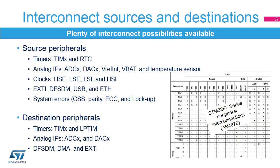The main peripherals having direct autonomous interconnections are connection sources — timers, analog IPs, clocks, extended interrupt event controllers, digital filters for sigma-delta modulators, USB interfaces, and system errors — and connection targets — timers, analog IPs, digital filters for sigma-delta modulators, and direct memory access controllers.